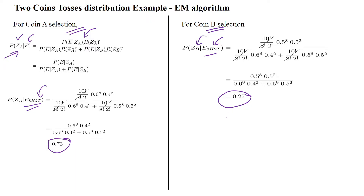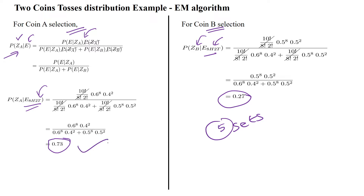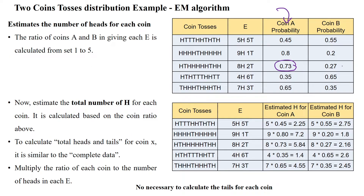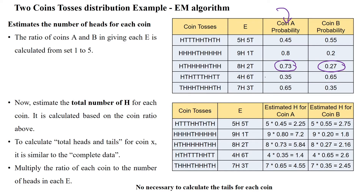Likewise, we calculate for all five sets. For set 1: P(coin A) = 0.45, P(coin B) = 0.55. For set 2: P(coin A) = 0.8, P(coin B) = 0.2. For set 3: P(coin A) = 0.73, P(coin B) = 0.27. We also calculate for sets 4 and 5 in the same way.